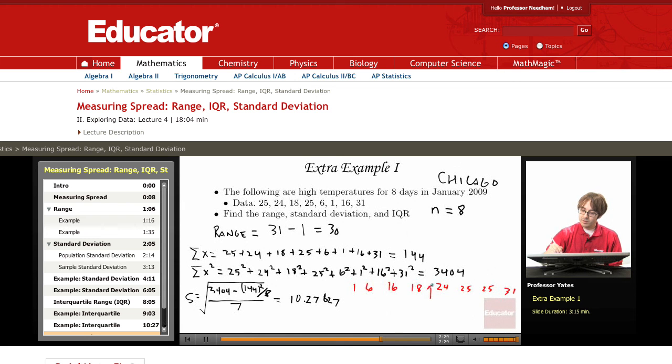The lower half of my data are these four values: 1, 6, 16, and 18. So Q1, because it's four observations, is the average of those middle two.